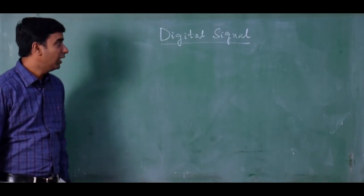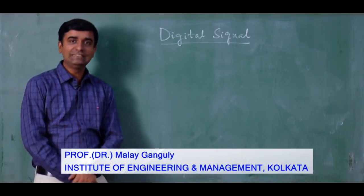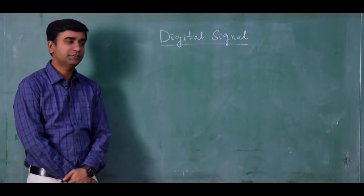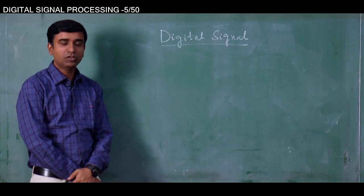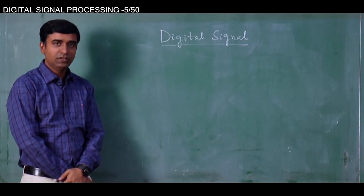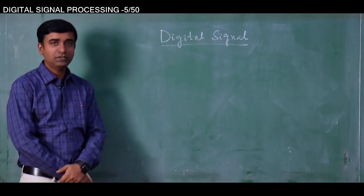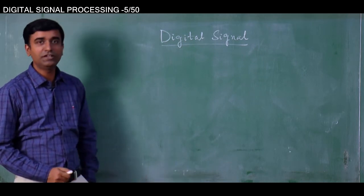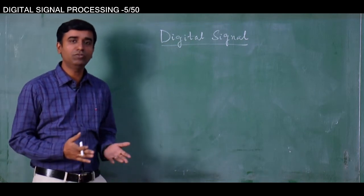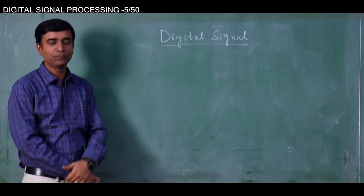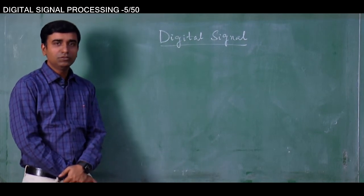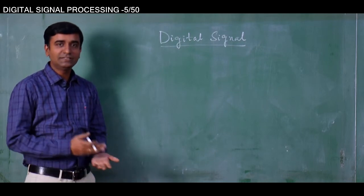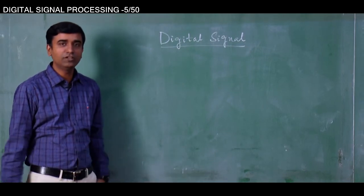In this lecture, we will have a detailed discussion on digital signals. In the last lecture, we already discussed what an analog signal is and what a digital signal is. We saw that an analog signal is continuous in time — it exists at each and every point of time during its existence — while a digital signal is derived from the analog signal and exists only at discrete points of time.